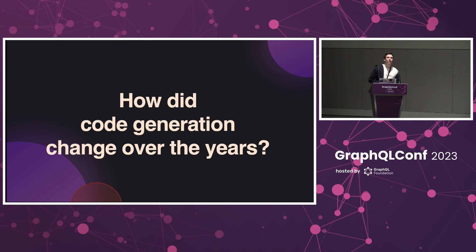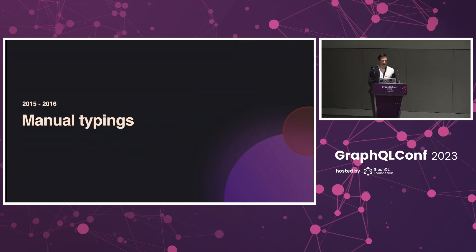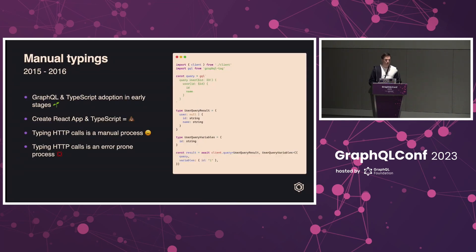Today I want to talk about my learnings from the last four years working on GraphQL code generator, and also how the code generation process in those four years has changed. GraphQL was released around 2015 to 2016, and when it was first released, TypeScript wasn't that big of a thing. Both GraphQL and TypeScript were in their early adoption stages. Everyone who used Create React App at that time and wanted to plug in TypeScript probably knows the pain.